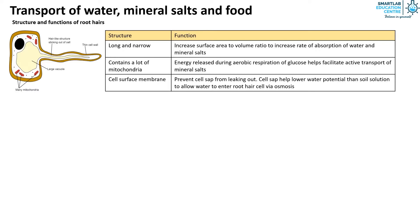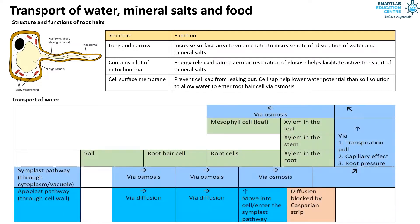Next, we will look at how water is transported. As discussed, the cell sap causes the water potential in the root hair cells to be lower than the soil. Water then crosses the partially permeable cell membrane and enters the cell by osmosis. The entry of water dilutes the sap, and now the sap of the root hair cell is of higher water potential than the adjacent root cell. Thus water passes by osmosis from the root hair cell into the inner root cell.